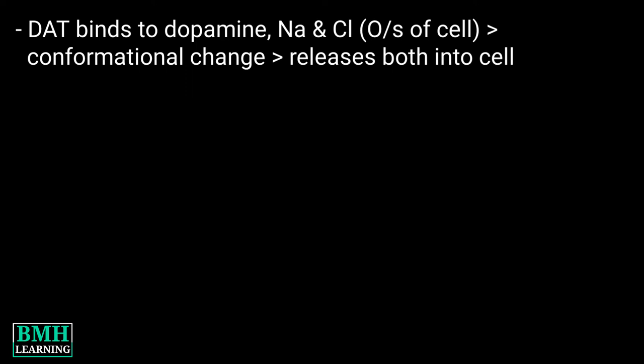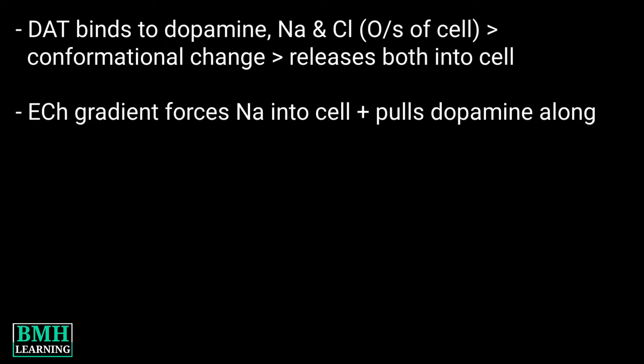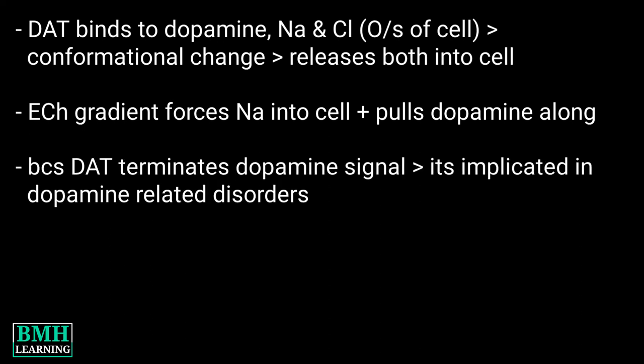When dopamine binds along with sodium and chloride ions on the outside of the cell, the transporter undergoes a conformational change that releases both into the cell. The electrochemical gradient forces sodium into the cell and pulls dopamine along, which terminates the dopamine signal.